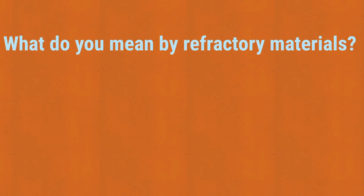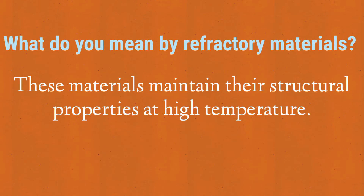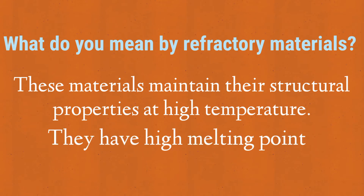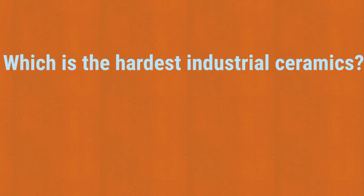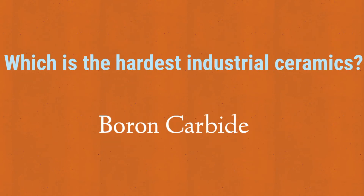What do you mean by refractory materials? These are materials which maintain their structural properties at high temperatures. They come with very high melting points, and examples are silica and Al₂O₃. Which is the hardest industrial ceramic? The answer is boron carbide.